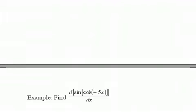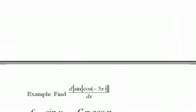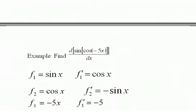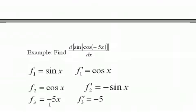We've got negative 5x inside the cosine, and all of this is inside the sine. And so I'm going to list all three functions as f1, f2, and f3.